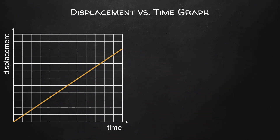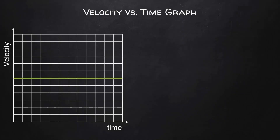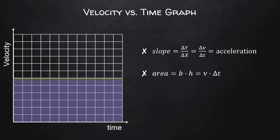If we have a displacement vs. time graph, the slope — called gradient in IB documentation — is equal to the velocity of the object. For a velocity vs. time graph, the slope is equal to acceleration. The area between the graph and the x-axis represents velocity multiplied by change in time. Rearranging the average velocity equation, displacement equals velocity times change in time, so the area of a velocity vs. time graph equals the displacement of the object.